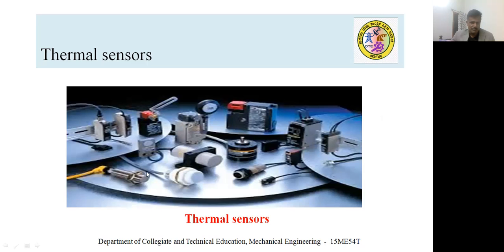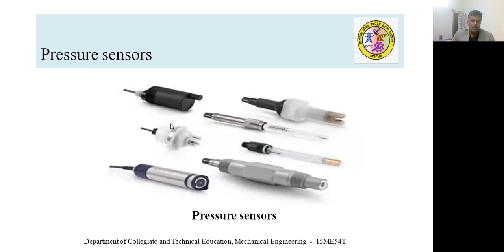These are different thermal sensors used in various applications — in thermal plants, chemical plants, and process industries to measure steam temperature, boiler temperature, etc. There are also a number of non-contact type sensors available these days, along with different pressure gauges that sense pressure and give output in analog or digital forms.